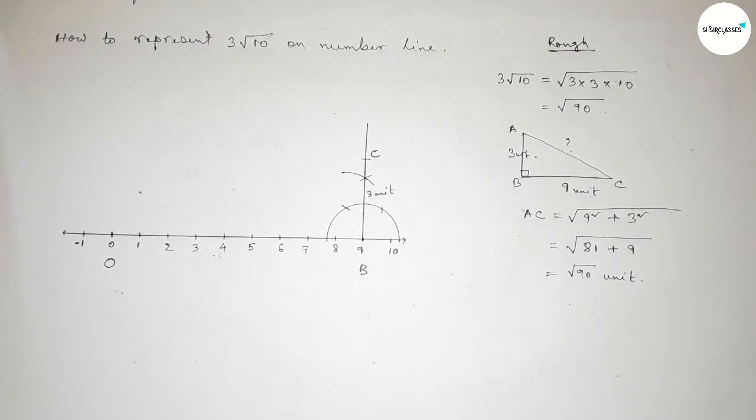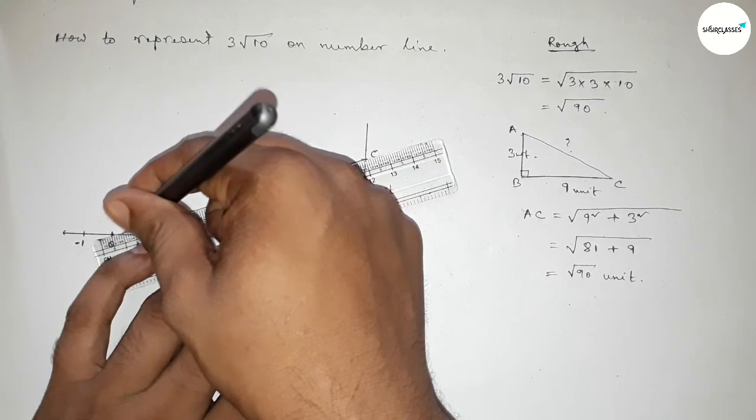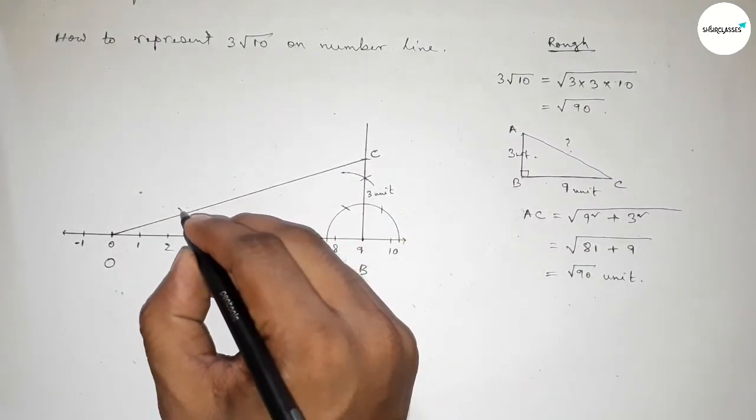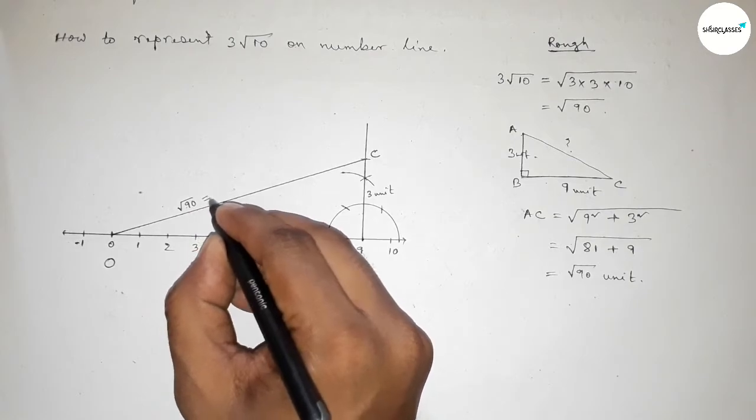So taking here point C and this is three unit length and this is nine unit length. Now joining O and C and this is the hypotenuse. So this is root 90 or equal to 3 root 10 unit.